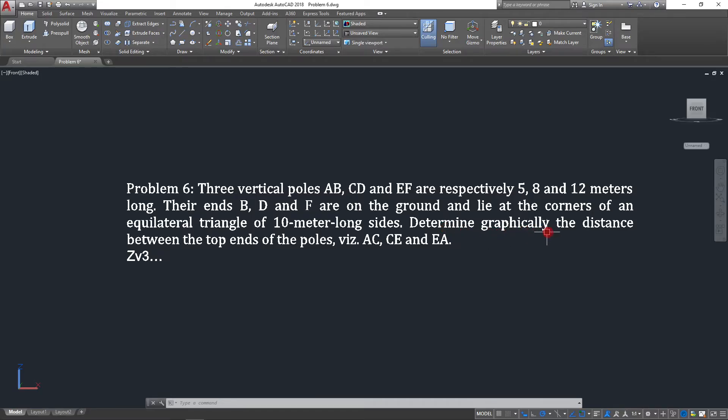Determine graphically the distance between the top ends of the poles. You need to find the distance between the top ends of the poles. The distance between the bottom end of the pole has been given: BD is 10, DF is 10, and FB is also 10 as they are forming an equilateral triangle of 10 meters side.